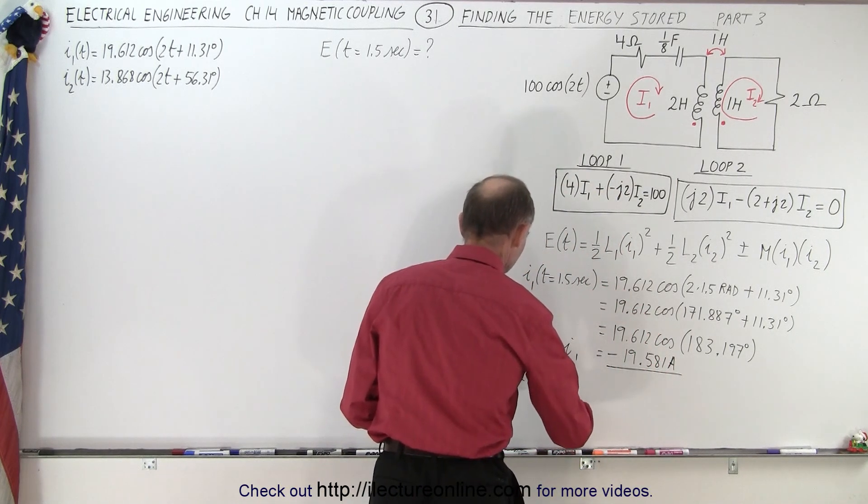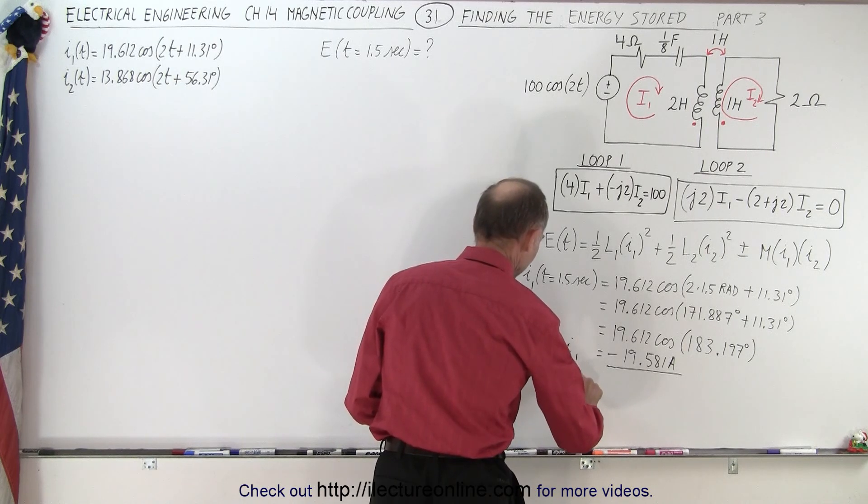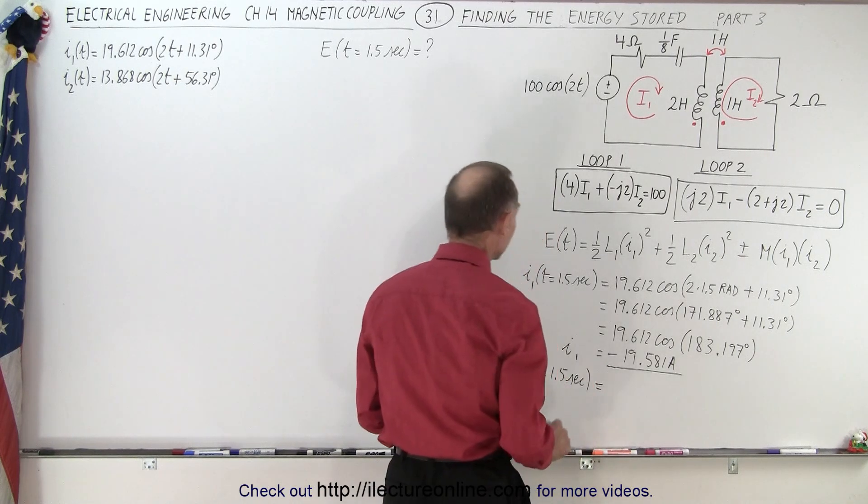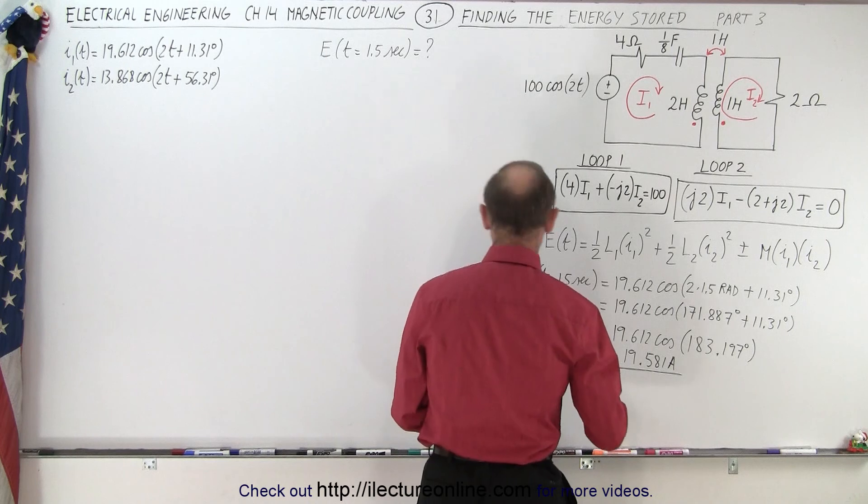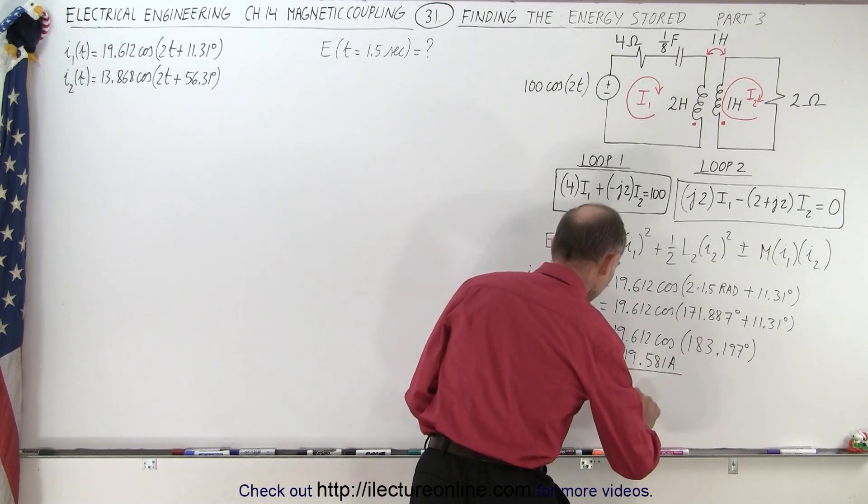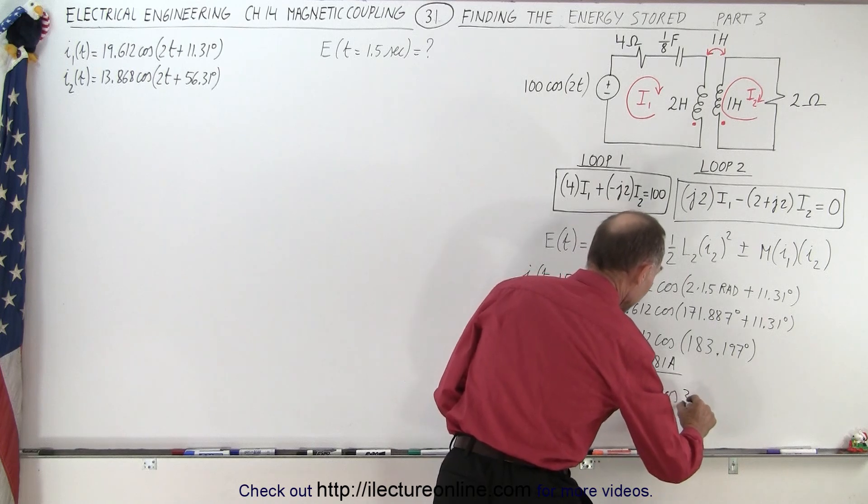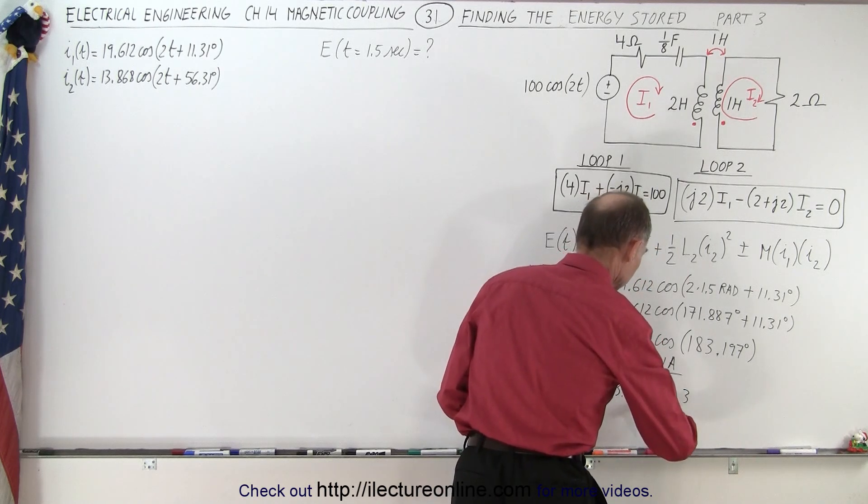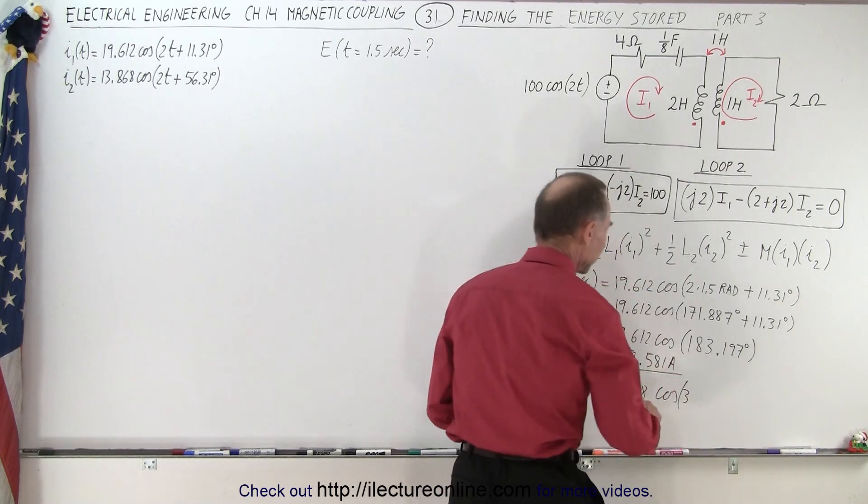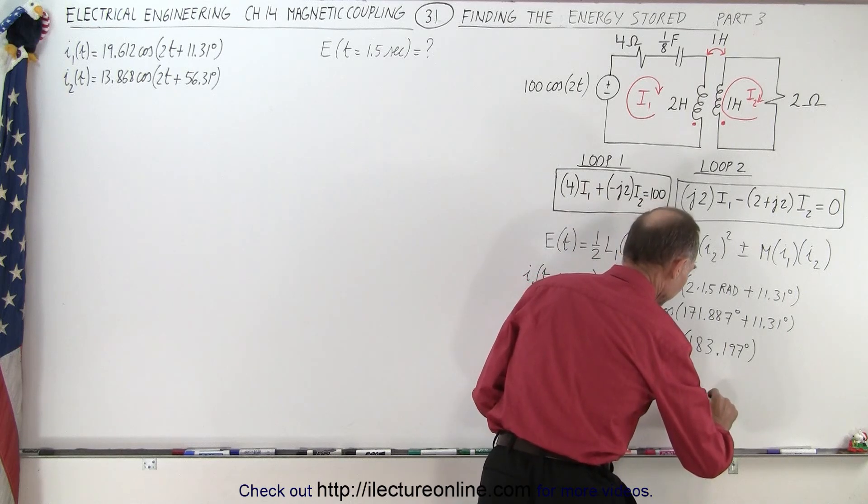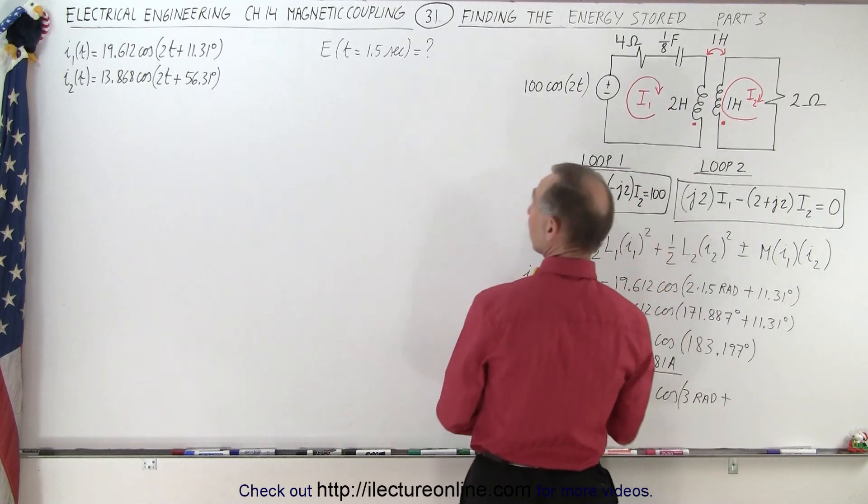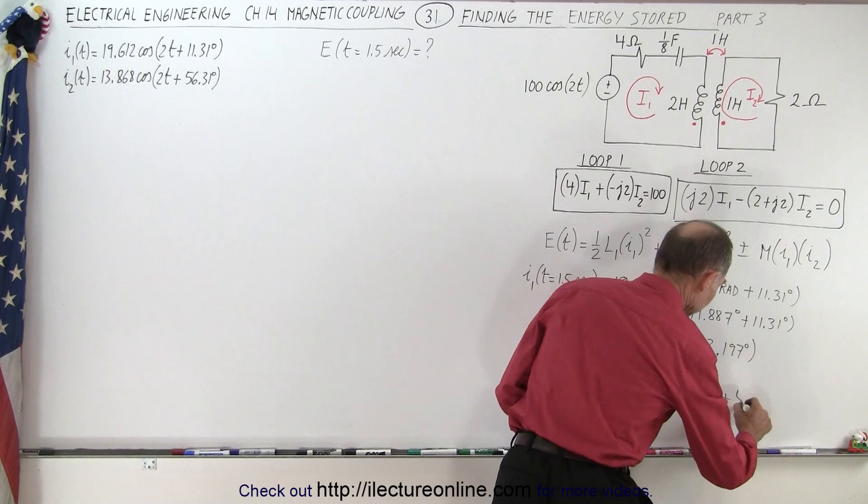For I2 we do the same thing, for t equals 1.5 seconds. And that's going to be equal to 13.868 times the cosine of 3 radians plus a phase angle of 56.31 degrees.